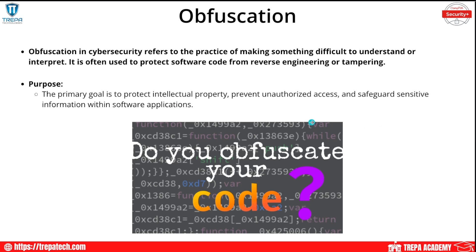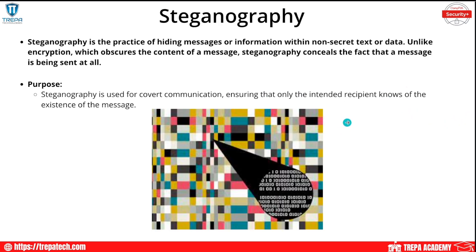Moving on to a concept called obfuscation — this involves the practice of making something difficult to understand or interpret. It is often used to protect software code from reverse engineering or tampering, as simple as just using weird variable names. The purpose is to protect intellectual property; it doesn't prevent unauthorized access outright, but it does safeguard sensitive information and helps you hide your code.